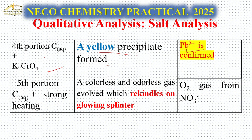Take another portion and apply strong heating. A colorless, odorless gas evolves which relights a glowing splinter - that's oxygen gas, which is coming from NO₃⁻ ion.